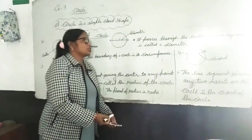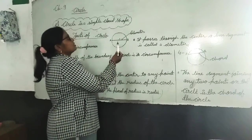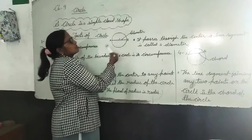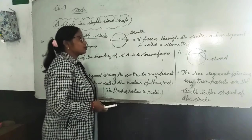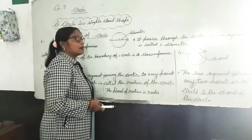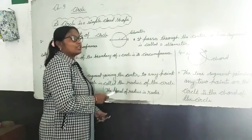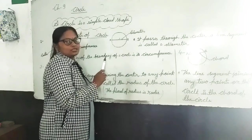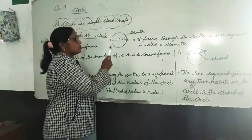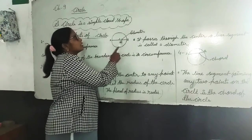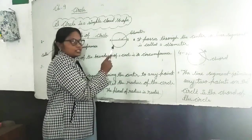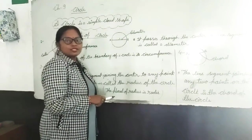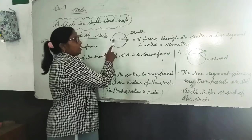Now I am talking about the diameter. In a circle, a line segment joining two points and passing through the center is called the diameter. It is called diameter.